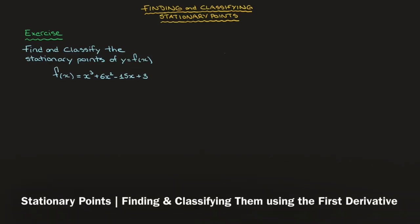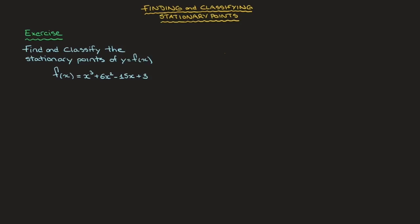Hi everyone. In this tutorial we learn how to both find and classify a function's stationary points using its derivative. When I say classify, I could also say determine the nature of the stationary points — that is, figure out whether we're dealing with a maximum, a minimum, or a horizontal point of inflection. We're going to work through the example here: find and classify the stationary points of y = f(x), where f(x) = x³ + 6x² − 15x + 3.